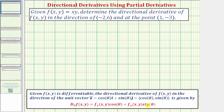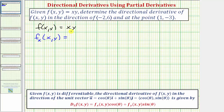To find the value of our directional derivative, we'll need to find the partial derivatives and then evaluate those partials at the point (1, -3). We'll also need to find the unit vector in the direction of the given vector. Given f(x, y) = xy, the partial derivative with respect to x is found by differentiating with respect to x treating y as a constant, so the derivative of xy with respect to x is just y. Evaluating at the point (1, -3) gives us negative 3.